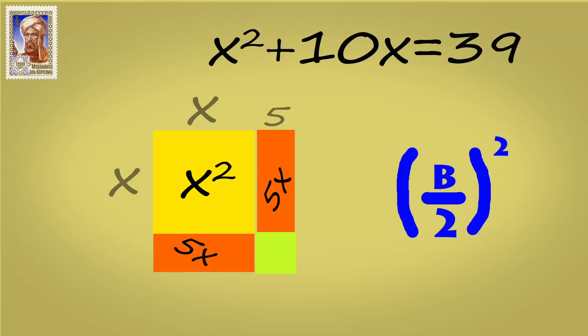So we originally started off with 10. So we cut that in half, which gave us 5. And if you square it, that's that box. So that's why we call it completing the square.